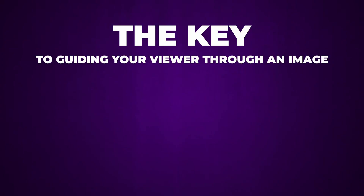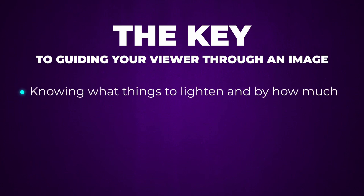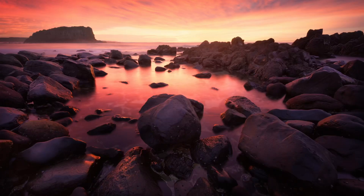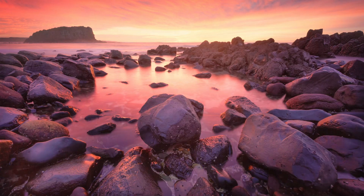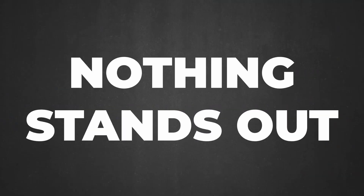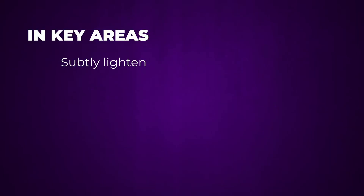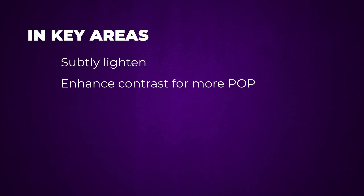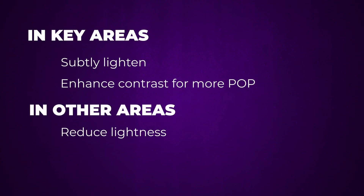Instead, you need to do it in a much more hidden way. The key to guiding your viewer with light and shadow is knowing what to lighten and by how much, and what to darken or leave the same. It's easy to get caught in the trap of brightening all the shadows too much, but when everything stands out, nothing stands out and your image becomes flat. So pick the key areas you want the viewer to look at, subtly lighten them, give them a touch more contrast, and darken other areas or leave already dark areas dark if they're not the key focus.